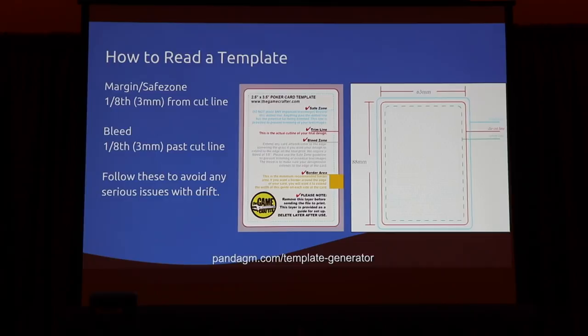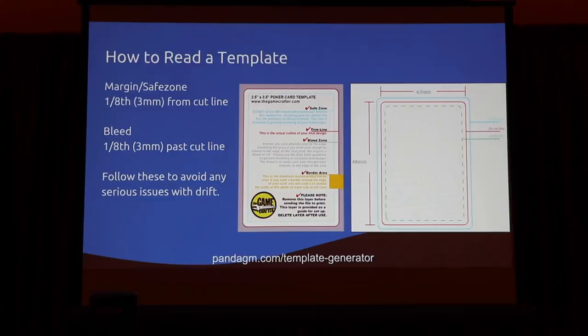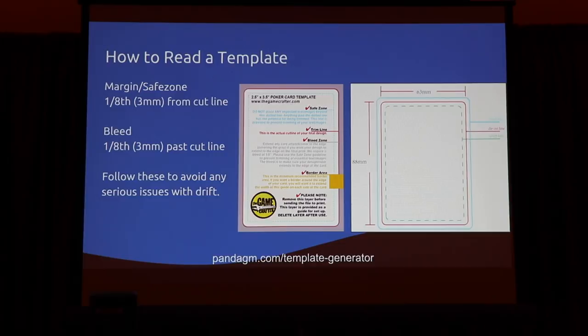Now let's talk templates — this is where you start. Your manufacturer where you're getting stuff printed should give you templates. If they don't, ask them. Any good printer should have their own templates. The gray area is your bleed. The red line is where they're going to cut your file, and the blue is your safe zone. Anything in that dotted line is safe — it's not going to get cut off your card. Because no matter where you're printing, you're bound to get drift. Anything in that bleed area is going to move into the card, and anything outside that blue dotted line could get cut off. Always follow templates.